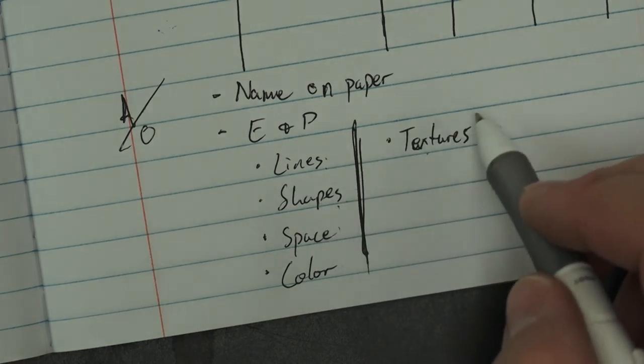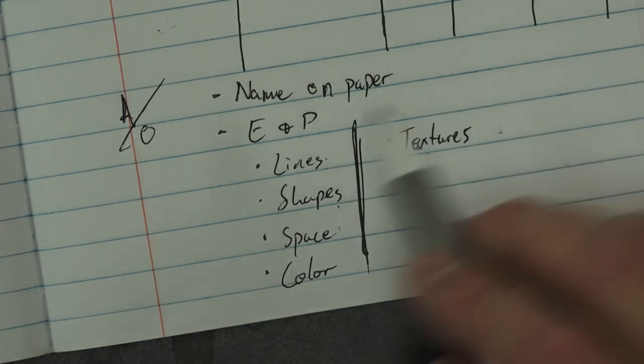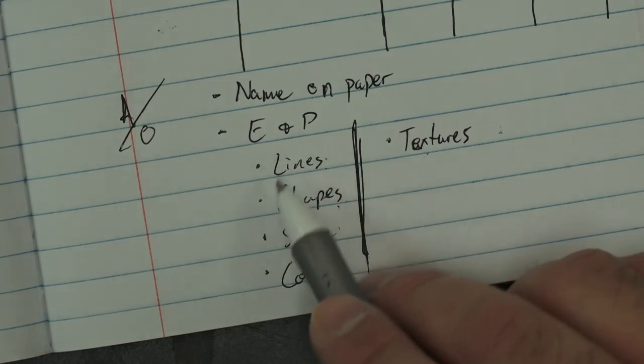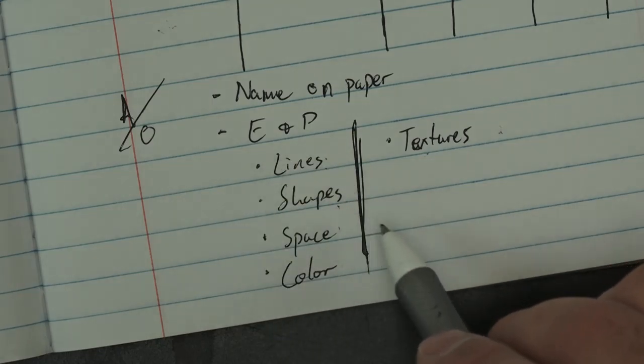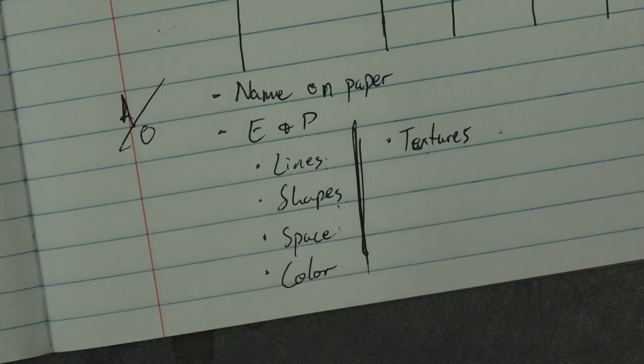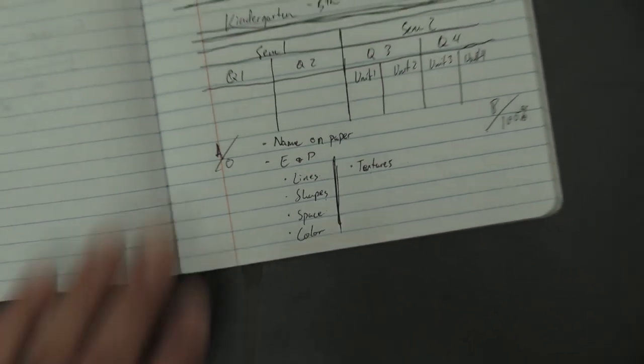Textures I would do a little further down the road. The reason being is because for a kindergartner, focusing on the usage of line and shape is a little more important than texture. You want their stuff to have some depth and substance, but you want to make sure that there's something that's identifiable in that artwork first.